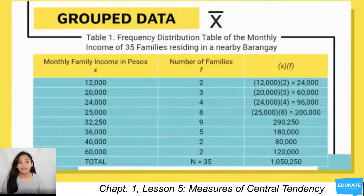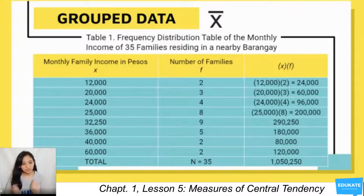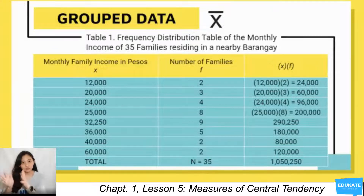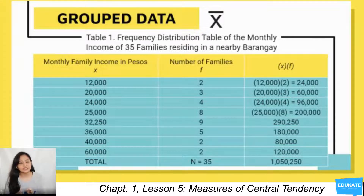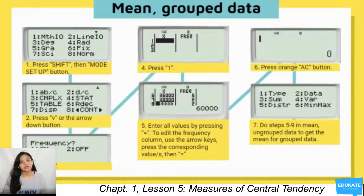To compute the mean of grouped data, you have three columns: monthly family income in pesos, number of families (frequency), and the product of income multiplied by frequency. For example, 12,000 times 2 equals 24,000; 20,000 times 3 equals 60,000. Totaling the fx column gives 1,050,250. Dividing by 35 gives 30,007.40. There is also a seven-step method using a scientific calculator — you can pause the video and follow those steps.